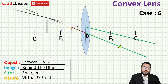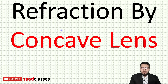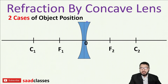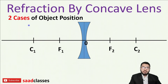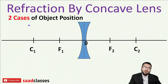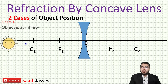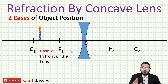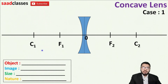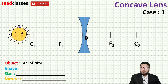Let's move on to concave lenses. This is the concave lens in front of us — same C1, F1, F2, and C2, with the optical center. We will study two cases for the concave lens, just as we studied two cases for the convex mirror. Case number one: the object is at infinity. Case number two: the object is placed anywhere in front of the lens.